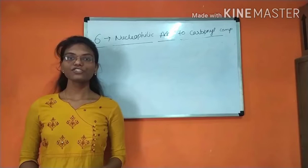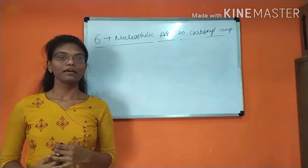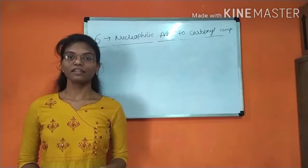Among those, we are first going to discuss about chapter number 6, that is nucleophilic addition to carbonyl compounds. Most commonly used carbonyl compounds are aldehydes and ketones. First we will discuss about what is nucleophilic addition reaction. The reaction in which a nucleophile forms a sigma bond with the electron deficient center is called nucleophilic addition reaction.